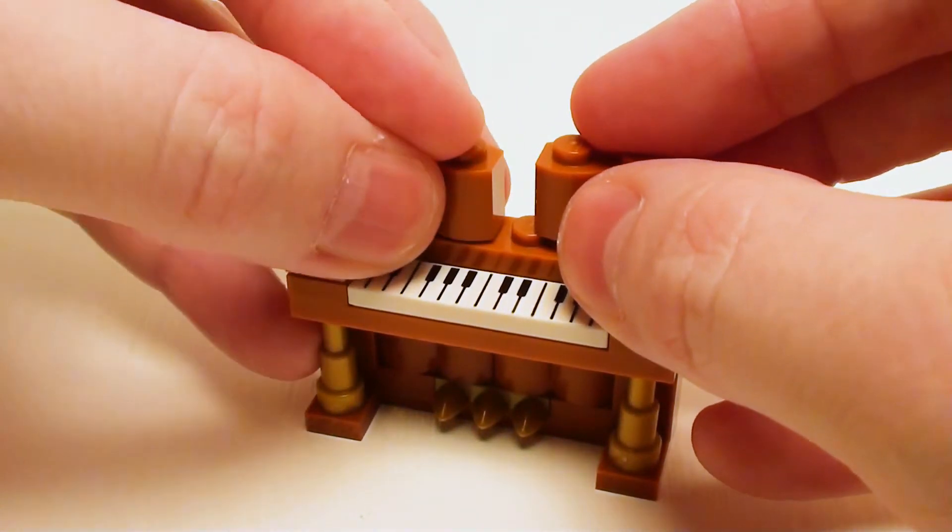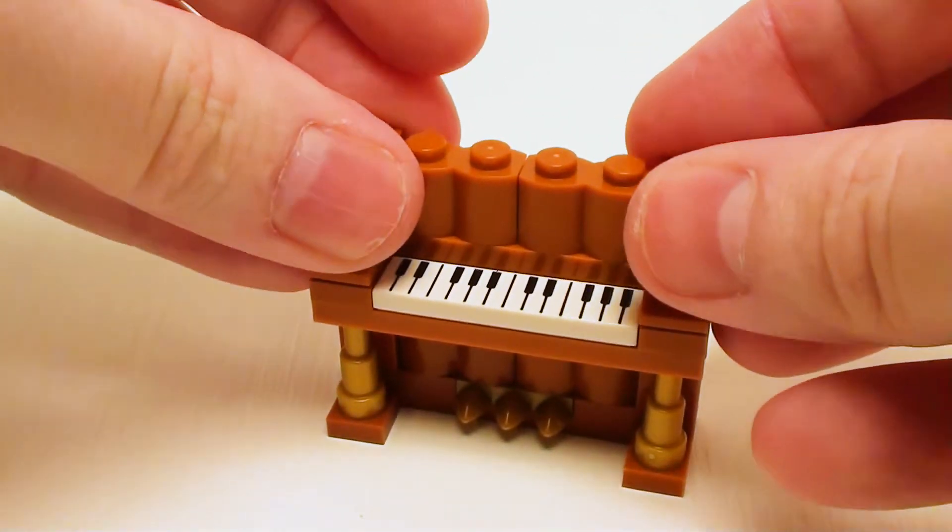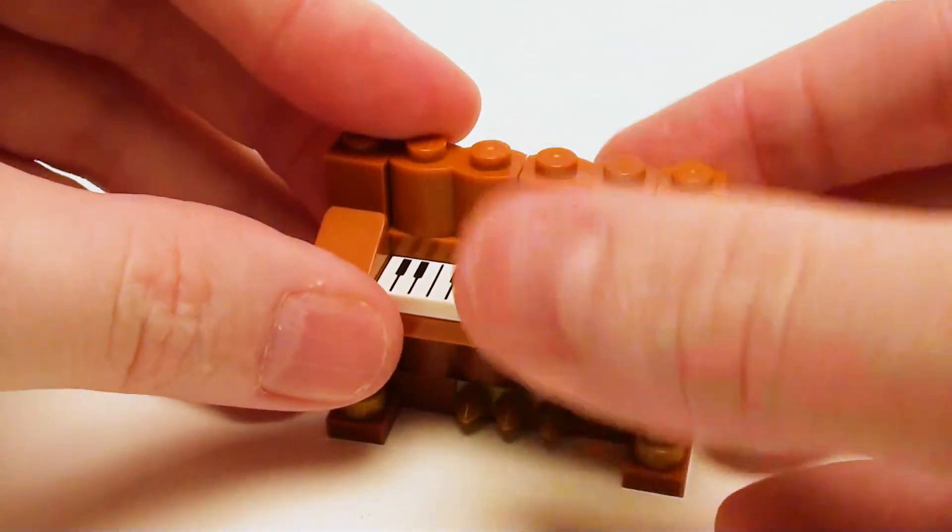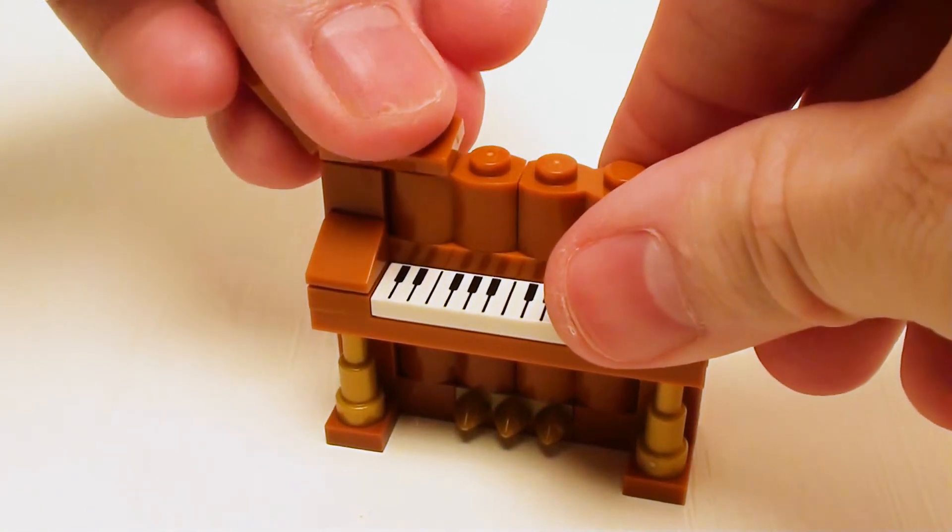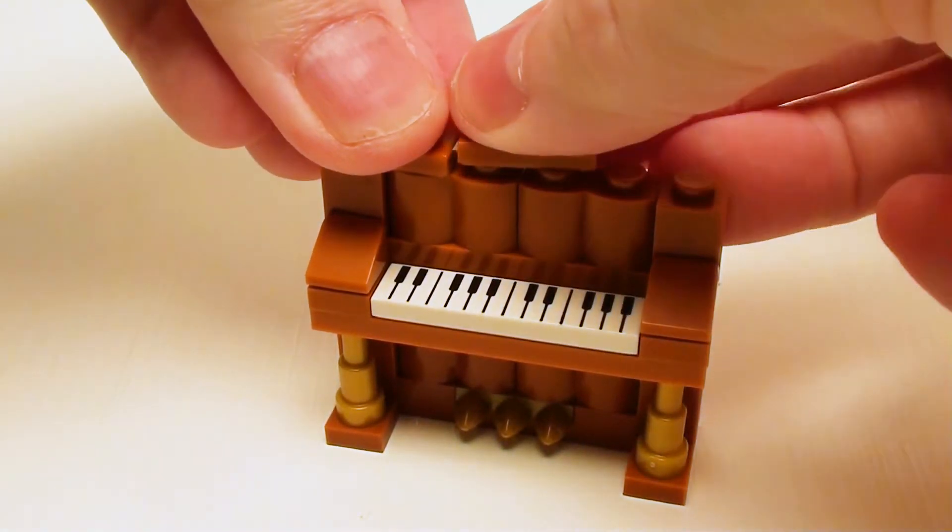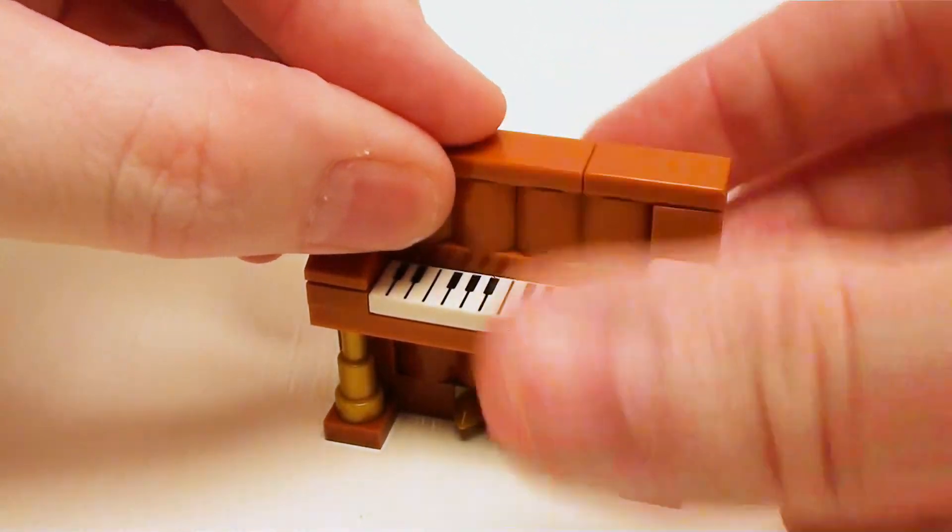In the back, a pair of 1 by 2 palisade bricks and a set of 1 by 1 bricks. And let's crown off the top with three 1 by 2 flat tiles to finish off the upright piano.